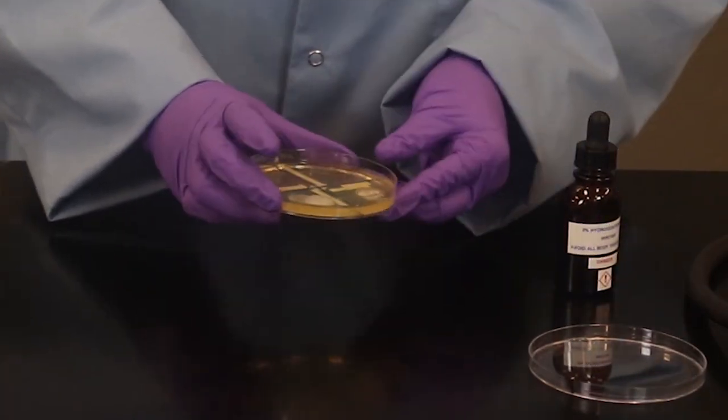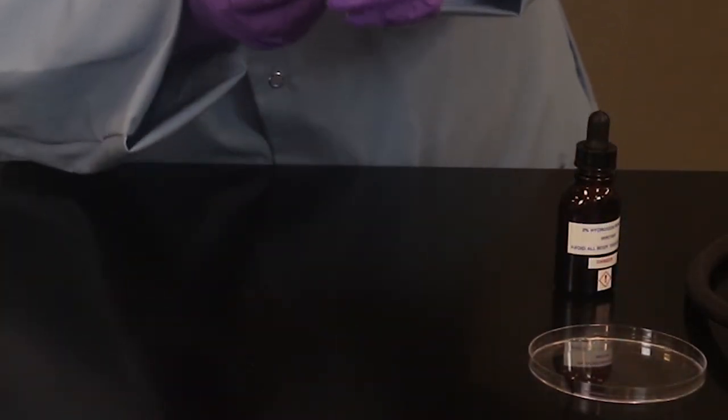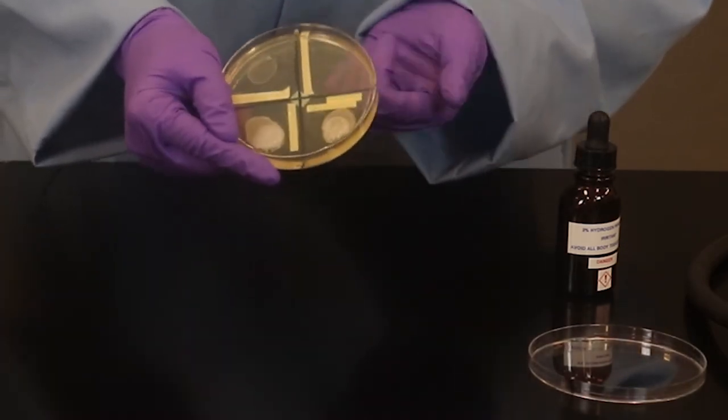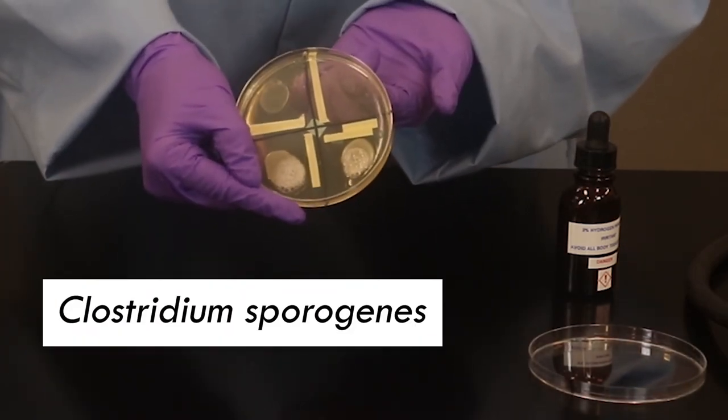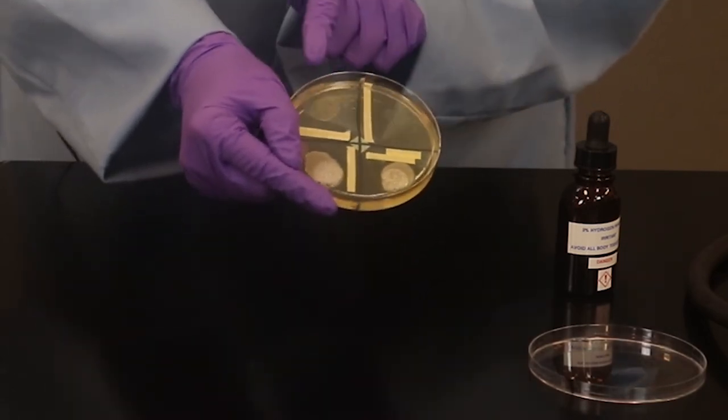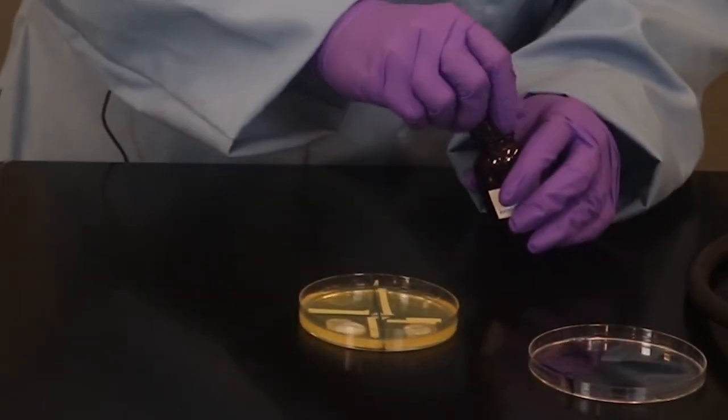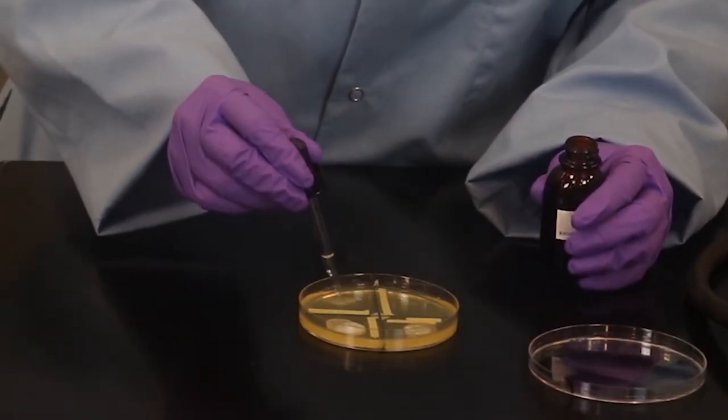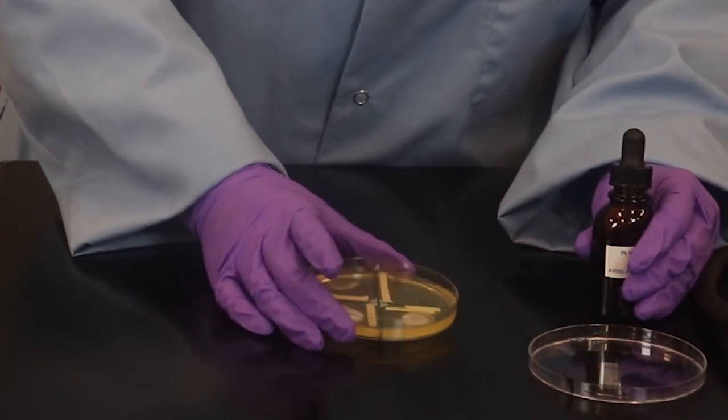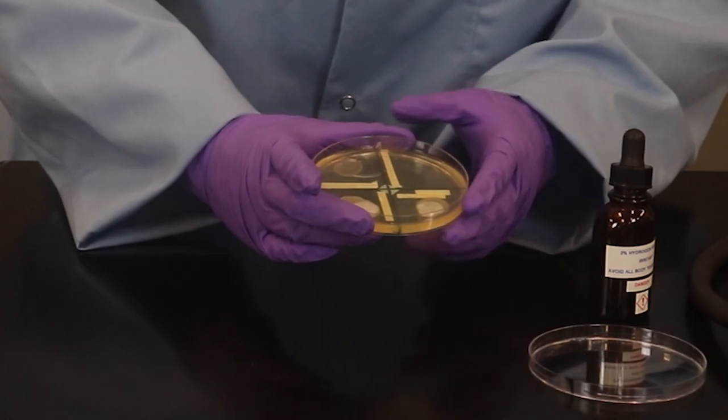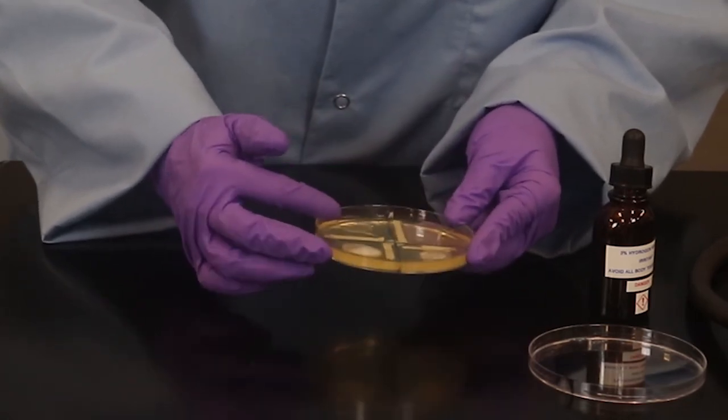And that's our Lactococcus lactis. Clostridium did not grow in an aerobic condition, so we can't test it from this petri plate. So we have one more that we can look at. Swirling some hydrogen peroxide around.